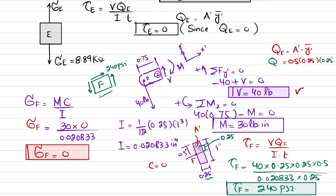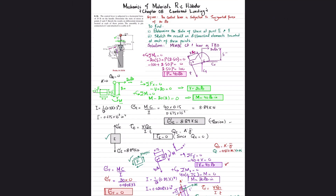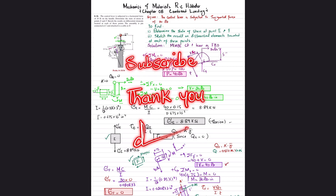The state of stress at point E is 8.89 ksi tensile normal stress with zero shear stress, and the state of stress at point F is zero normal stress with 240 psi shear stress. That concludes problem 8-34. Playlists for different chapters are available in the description box. If you have any questions, please ask in the comment section. Thank you for watching.